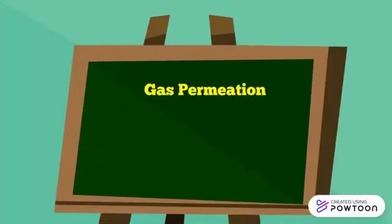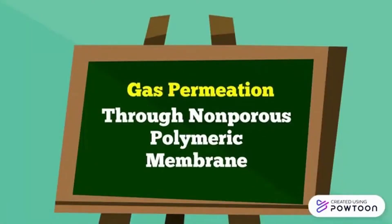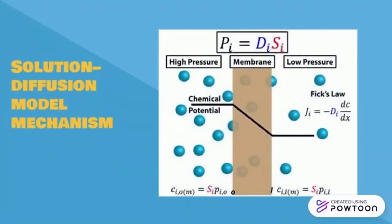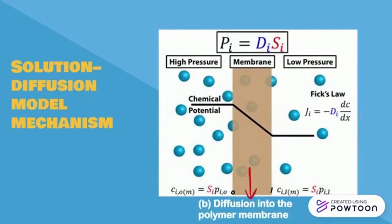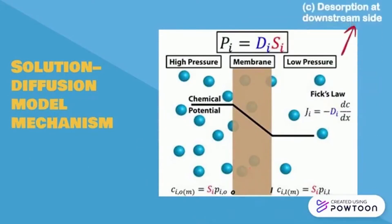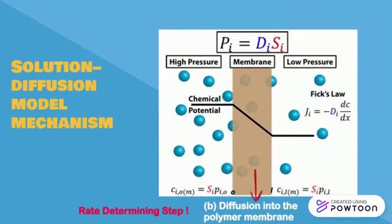Now let's look at gas permeation through a non-porous polymeric membrane. This can be done by the solution diffusion model mechanism, which also has three steps. First is the absorption at the interface of the polymer, or upstream side. Second is the diffusion into the polymer membrane. And third is the desorption at the downstream side. Step two is the slowest, hence it is the rate determining step.